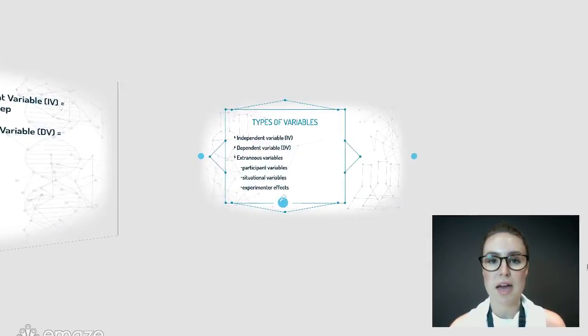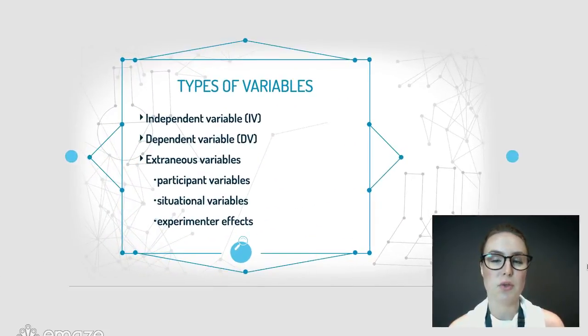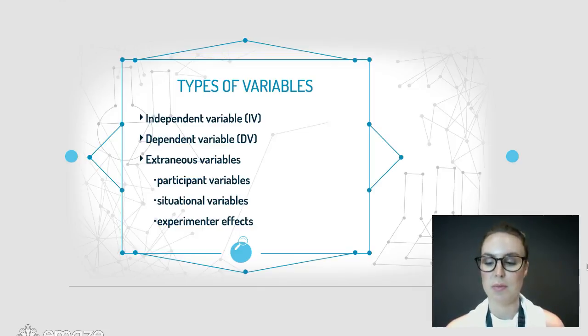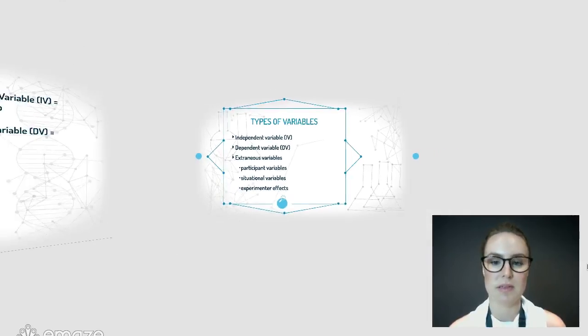The types of variables we're going to talk about today: number one, the independent variable; number two, the dependent variable; and lastly we're going to talk about some extraneous variables in experiments.